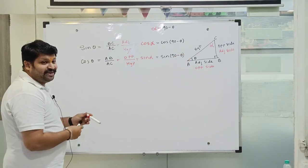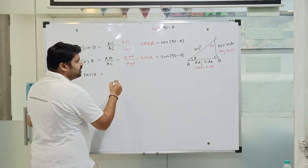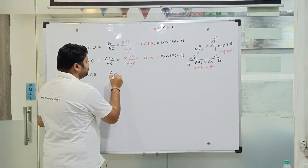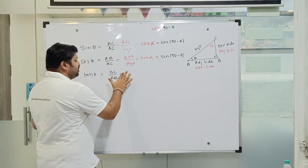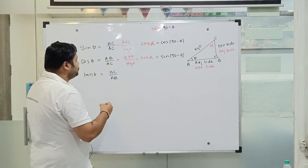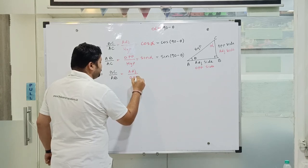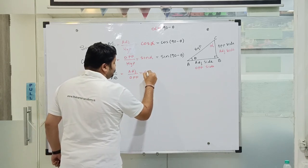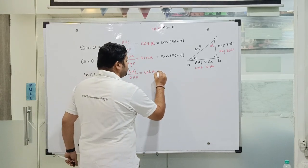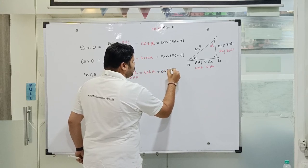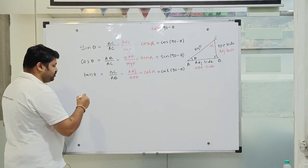Then tan theta will be BC upon AB. With reference to alpha, it is going to be the adjacent side upon the opposite side, which would be cot alpha. So we can say that tan theta is equal to cot of 90 minus theta.